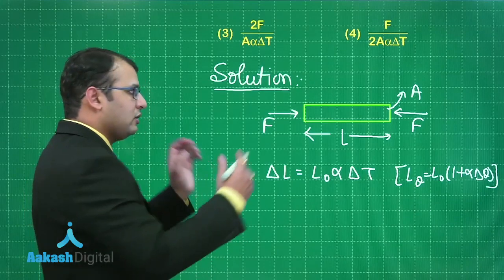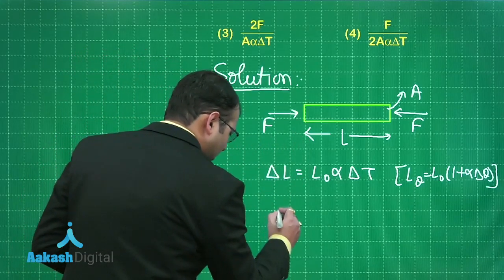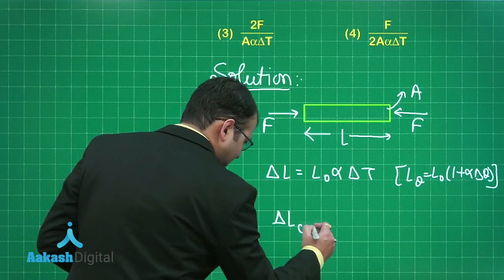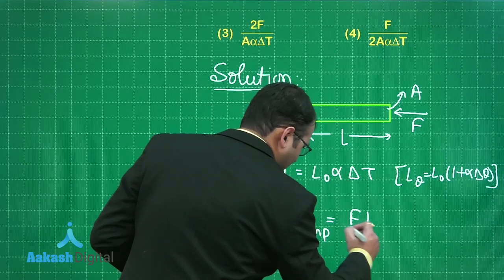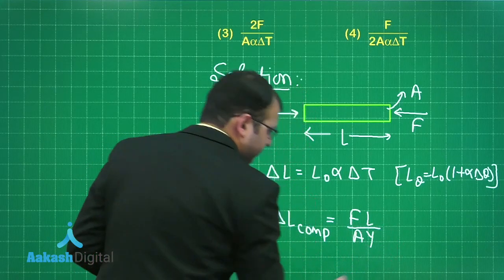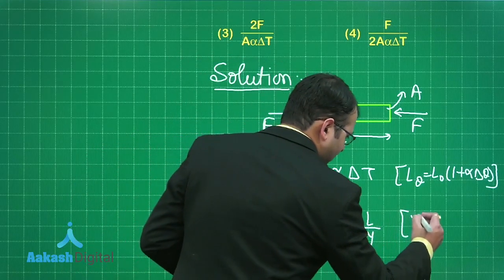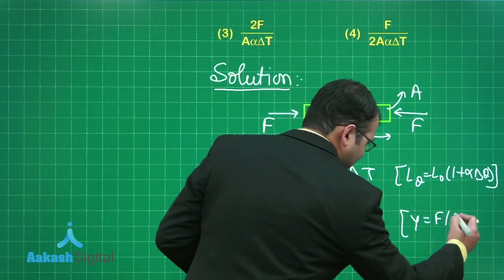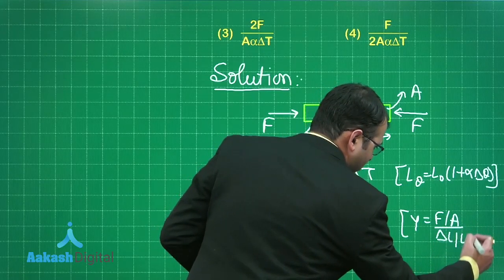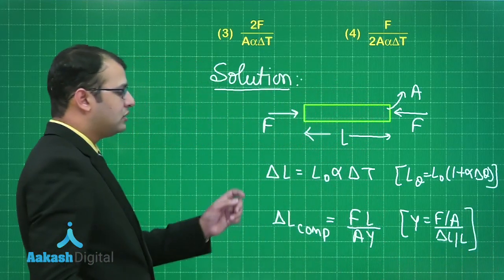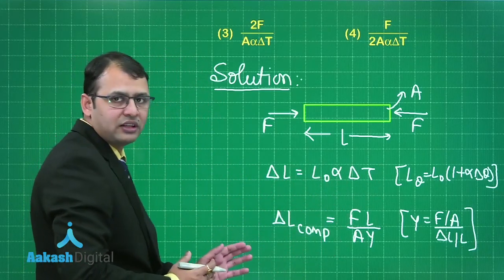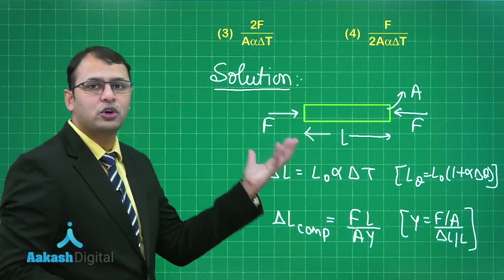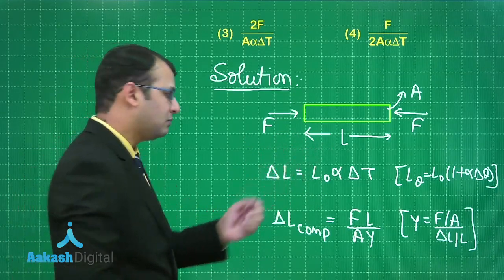Due to this compressive force, ΔL_compressive will be equal to FL/AY. Why this formula? As we are aware, Y equals F/A (stress) by linear strain or longitudinal strain. Now with this formula, this would be expanding length, this would be compressive length, and as per the question the length should not change when we increase the temperature. That means both the values should be equal and compensate each other, so by magnitude both ΔL should be same.